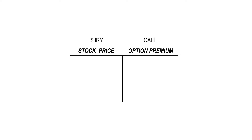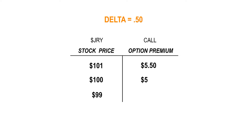So for example, let's say the stock JRY is trading at $100. And if I buy a call option on it for $5 and the delta shows 50 cents, that means if JRY's price goes up a dollar to $101, the value of my call option will increase by the delta, which in this case is 50 cents. So my option value goes up to $5.50. Or if instead, JRY's price dropped a dollar to $99, my option value decreases by the delta to $4.50.